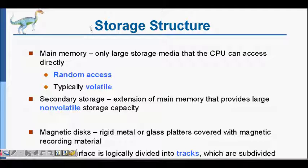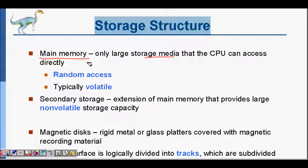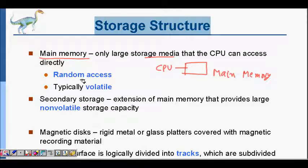We will learn about the storage structure of your operating system or basically your computer. We have the main memory — your RAM. Only large storage media that the CPU can access directly. The CPU executes all the instructions and the RAM is directly connected to your CPU, so CPU can access the memory directly. That's why it's called main memory — because CPU can access this memory.